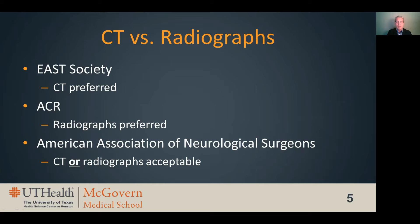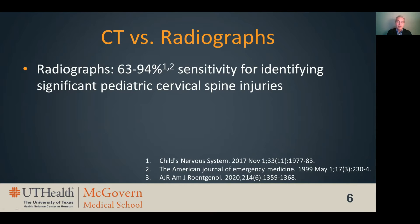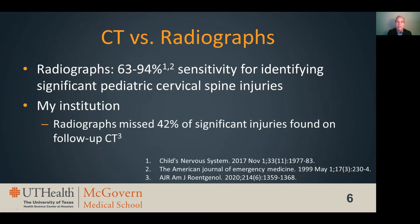There is some nuance to these positions, and a more detailed explanation can be found in the handout for this presentation. My institution generally follows the East Society guidelines, so almost all pediatric trauma gets a cervical CT, which I wholly support. Prior studies vary widely in reported sensitivity of radiographs for identifying significant pediatric cervical injuries, ranging from about 65% to 95%. At my institution, we found that over 40% of pediatric patients with significant cervical spine injuries who had radiographs performed prior to CT had their initial radiographs read as normal, suggesting radiographs are closer to 65% sensitivity than 95%.